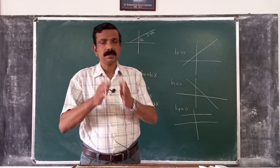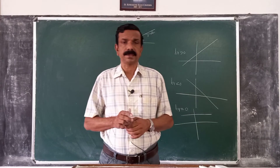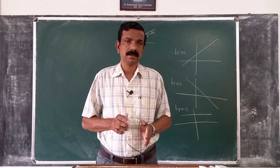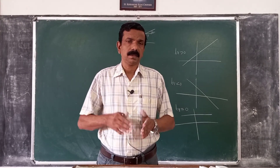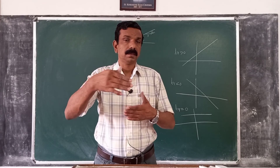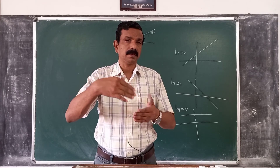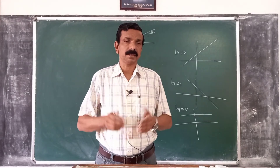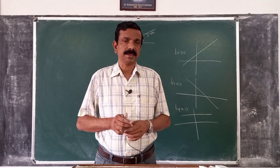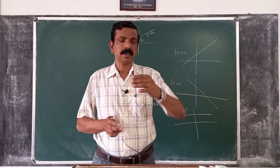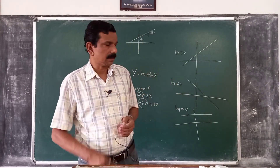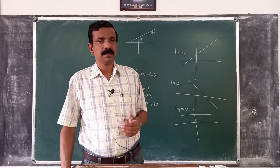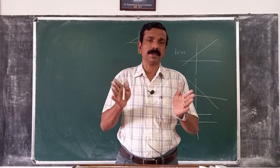First, we consider simple linear regression and how to estimate the parameters. Then we will consider linear correlation as a measure of association between two variables, and we will also discuss what is the difference between regression and correlation.